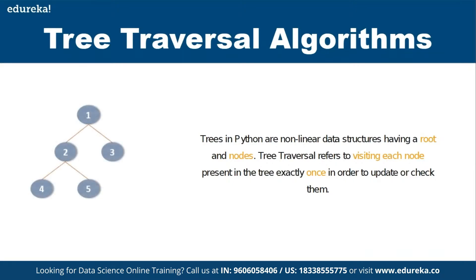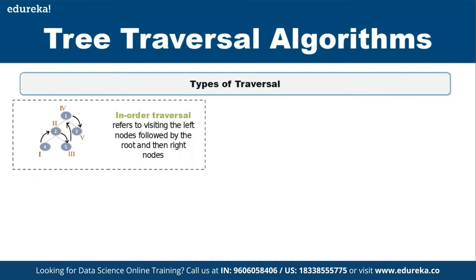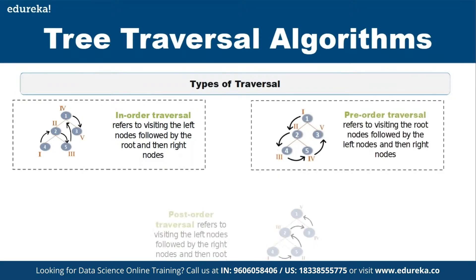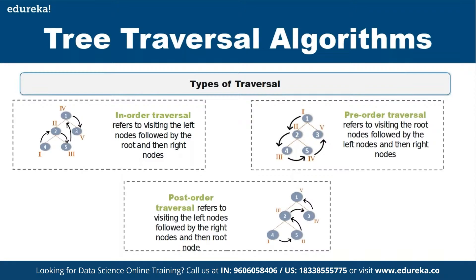If you consider this as a binary tree — where every node has two branches — a tree traversal means you should touch all nodes at least once. There are different types of traversal algorithms: in-order traversal, pre-order traversal, and post-order traversal. In-order traversal visits the left node, then the root, then the right node. Pre-order visits the root first, then left and right. Post-order visits left, then right, then the root. The naming is based on when you visit the root node.